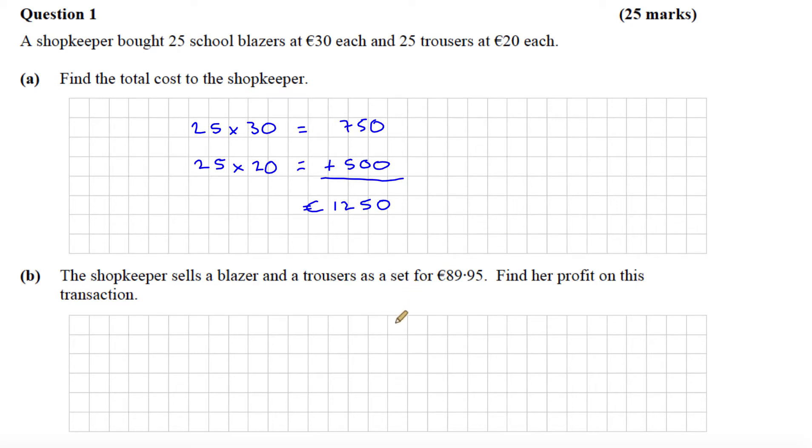Part B: The shopkeeper sells a blazer and trousers as a set for 89.95. Find her profit on this transaction. Well, a set costs her 20 plus 30 which is 50. If she sells them for 89.95, the profit will be the difference: 89.95 minus 50, which is 39.95 euro profit.